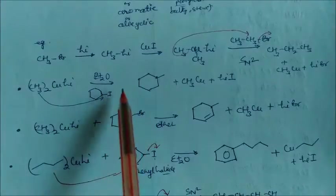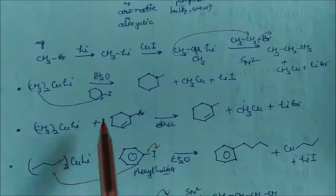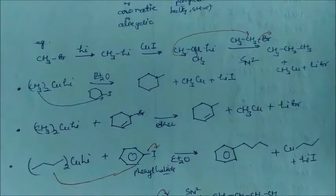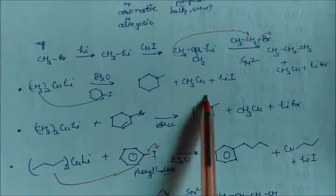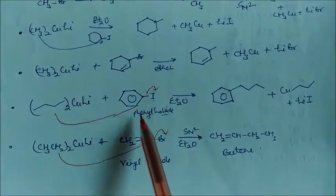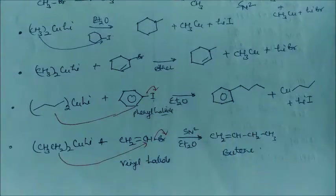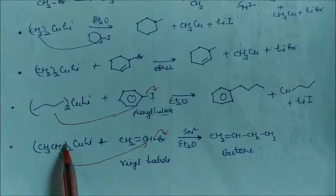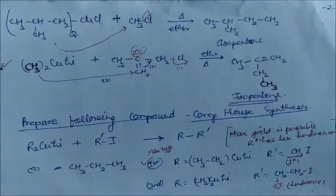Similarly, if you use dimethyl cuprate lithium in diethyl ether with another compound, one methyl will attack and the iodide will leave, giving the corresponding product. If the substrate is a cycloalkene, again one methyl attaches via SN2 to give the methylated cyclic product. If you use a benzyl halide substrate, the whole group combines and you get phenylbutane as the product. In another example, an alkyl group attacks a vinyl halide via SN2 to give butane.